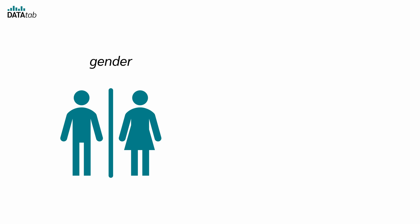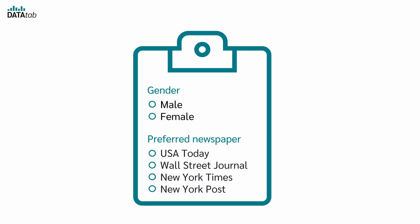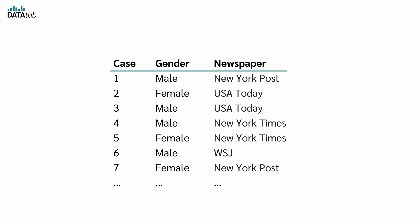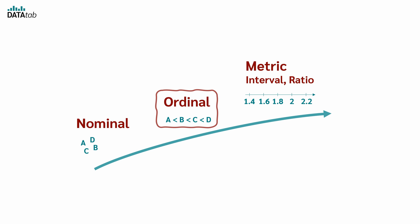An example: we would like to investigate whether gender has an influence on the preferred newspaper. Both variables are nominal. So when we create a questionnaire, we simply list the possible answers for both variables. Since there is no meaningful order for nominal variables, it usually does not matter in which order the categories are listed in the questionnaire. Then we can display the collected data in a table, where each row is a person with a respective answer. We can now use our data to create frequency tables or bar charts.